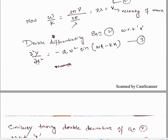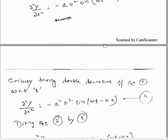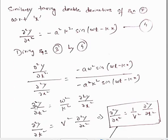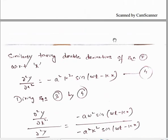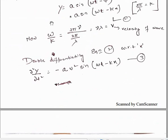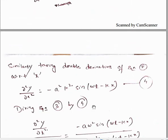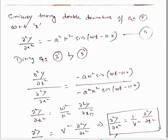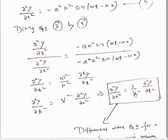Now, if I divide these two quantities — that is, ∂²y/∂t² (equation 3) divided by ∂²y/∂x² (equation 4) — I am left with ω²/k². Since ω/k = v, therefore ω²/k² = v². Therefore the final expression is: ∂²y/∂x² = (1/v²)·(∂²y/∂t²).